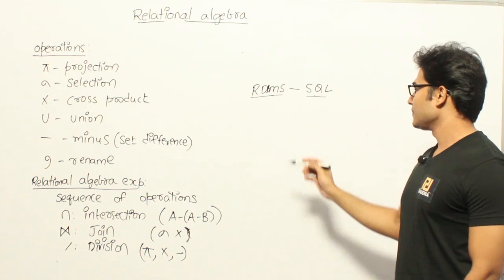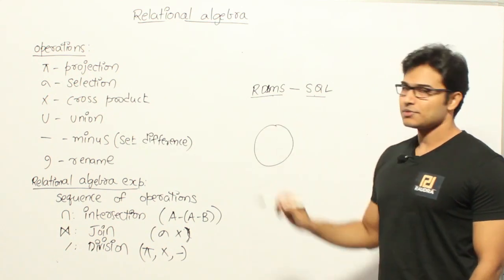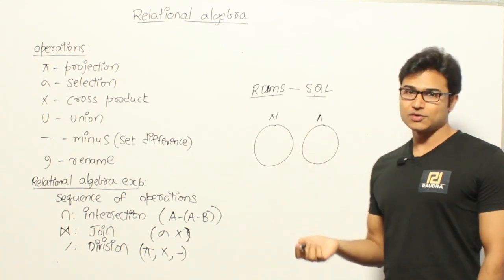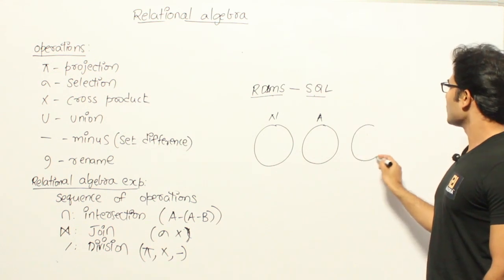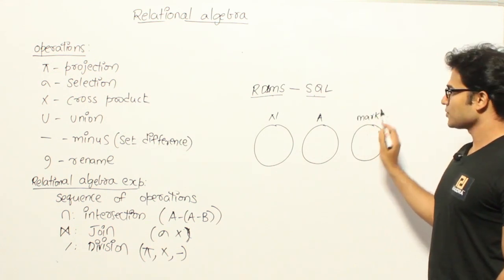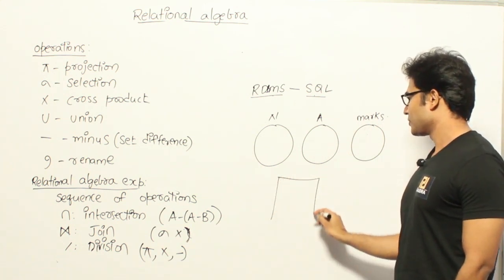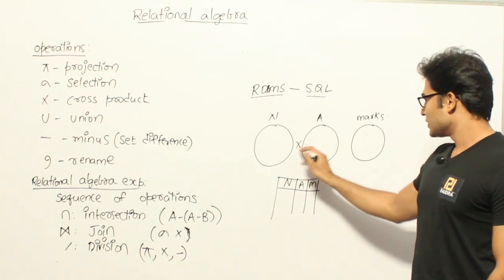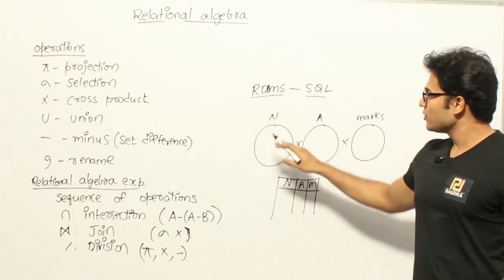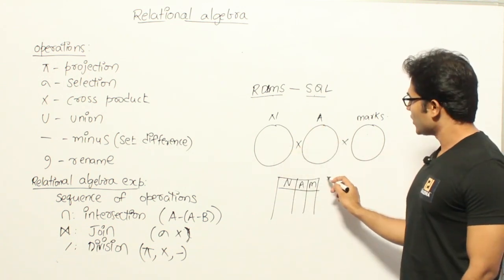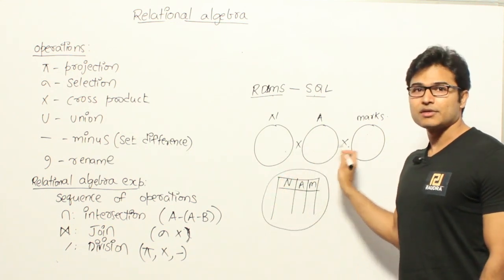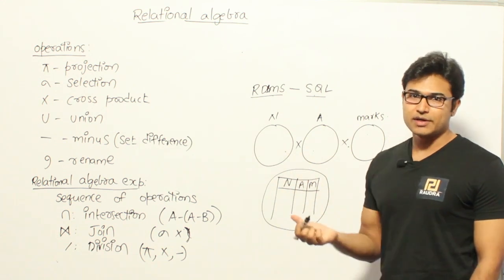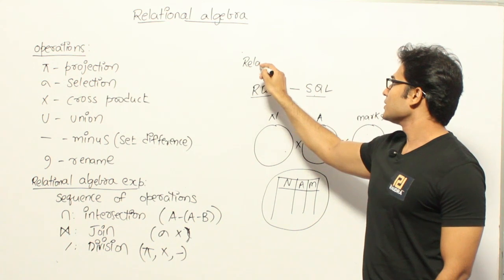For example, if you look at 'name', you can think of it as the set of all names possible in the universe. Similarly, you can think about all the numbers possible for 'grade', and the set of all marks possible for 'marks'. If I create a table containing these three attributes — name, grade, and marks — you can think of it as the cross product of these three sets. I'm not going to include every possibility; I'm taking a subset of it. Therefore, a table can be viewed as a subset of a cross product, which is called a relation. This way of looking at tables is called the relational model.